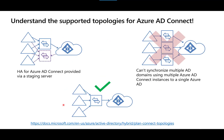Make sure you're clear on the different topologies supported for Azure AD Connect. For example, how would you set up Azure AD Connect for a high availability scenario? You'd set it up with a staging server — but how would activation of that staging server work in practical terms, and what would the failover process look like?